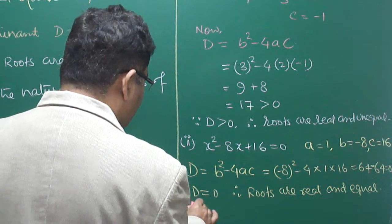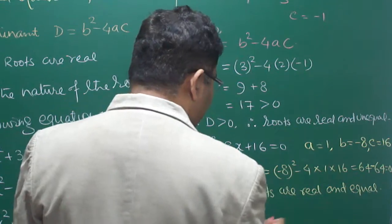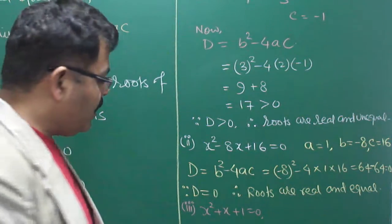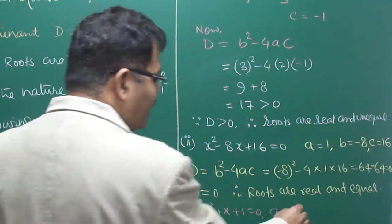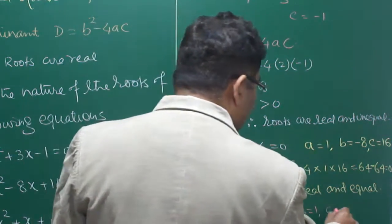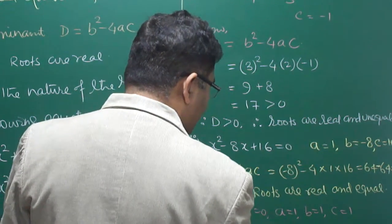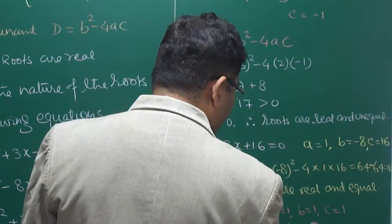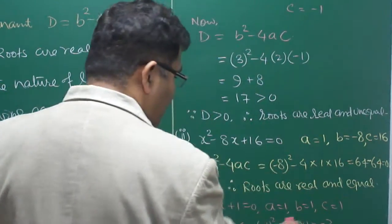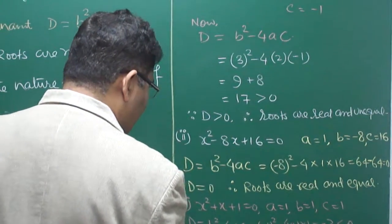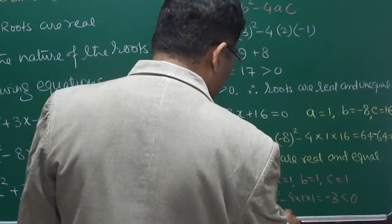The third question is x squared plus x plus 1 equals zero. A equals 1, B equals 1, C equals 1. D equals b squared minus 4ac, that is 1 squared minus 4 times 1 times 1 equals 1 minus 4 equals minus 3, which is less than zero. Since D is less than zero, therefore roots are not real.